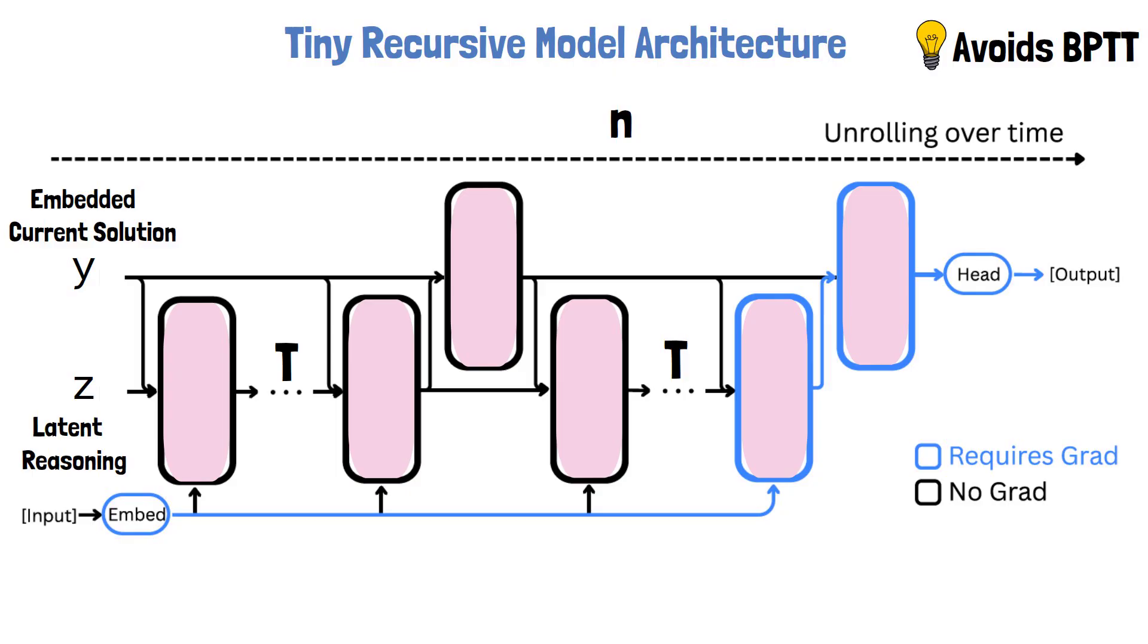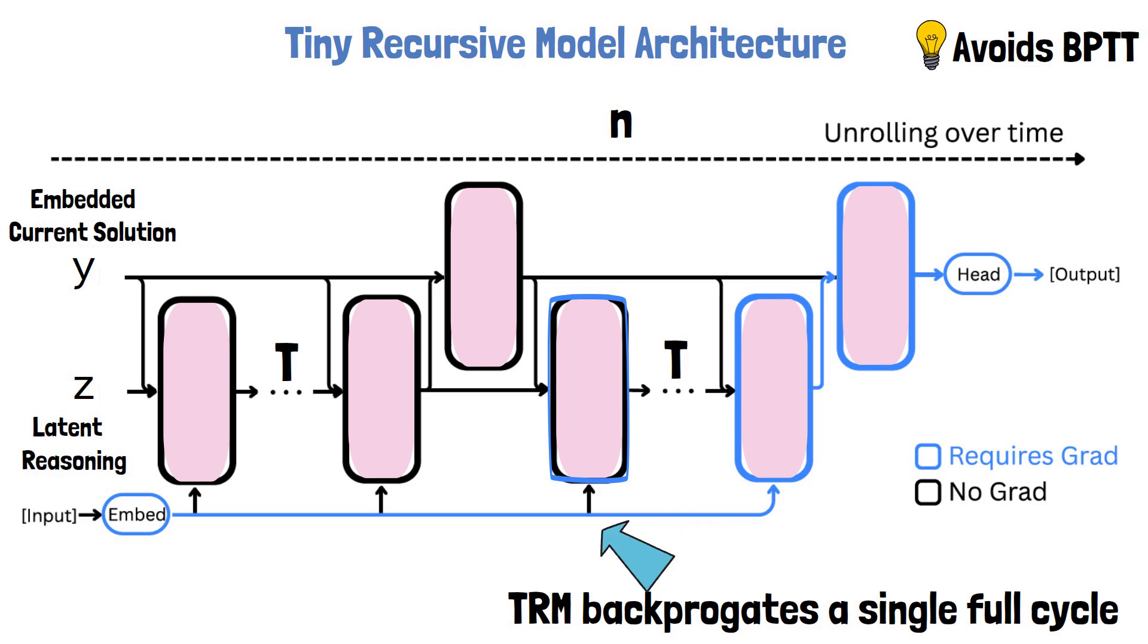As the Tiny Recursive Model paper points out, that's rarely guaranteed in practice, and the Hierarchical Reasoning Model never actually checks if the model converged before applying the update. To remove this assumption, the Tiny Recursive Model takes a different approach. TRM backpropagates through a single full cycle, which includes one step of output refinement and t steps of latent reasoning refinement. This requires a few more backward passes compared to HRM, but it's still way more efficient compared to backpropagation through time since the model can run for many cycles. By training over a full cycle, the model learns to improve its reasoning iteratively. In other words, it starts each cycle with some initial y and z inputs and learns to make them better. This doesn't require a strong mathematical assumption. During inference, multiple forward cycles push it progressively closer to the correct solution.